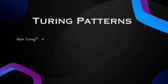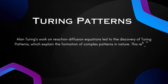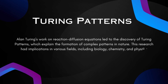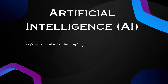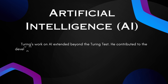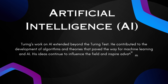Turing Patterns: Alan Turing's work on reaction-diffusion equations led to the discovery of Turing Patterns, which explain the formation of complex patterns in nature. This research had implications in various fields, including biology, chemistry, and physics. In the field of artificial intelligence, Turing's work extended beyond the Turing Test — he contributed to the development of algorithms and theories that paved the way for machine learning and AI, and his ideas continue to influence advancements in intelligent systems.